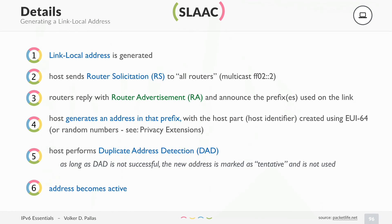Once you have received the router advertisement with the prefixes, you can generate a global IPv6 address from this prefix. So the start of the address is not FE80 anymore, but it is the network prefix that was announced. The rest is also configurable by EUI-64, like with link-local, or you can use random numbers with privacy extensions. The way the address is generated is just the same — FE80 is simply replaced by your real public network that is announced by the router.